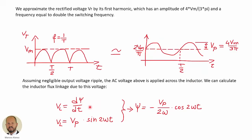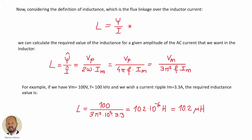With this, we can calculate the flux linkage in the inductor using the Faraday equation — this is the expression of the voltage across the inductor — so we can finally calculate the flux linkage. Now considering the definition of inductance, which is the flux linkage over the inductor current, for sinusoidal operation we can obtain the inductance as the ratio of the amplitude of the flux linkage over the amplitude of the current through the inductor.